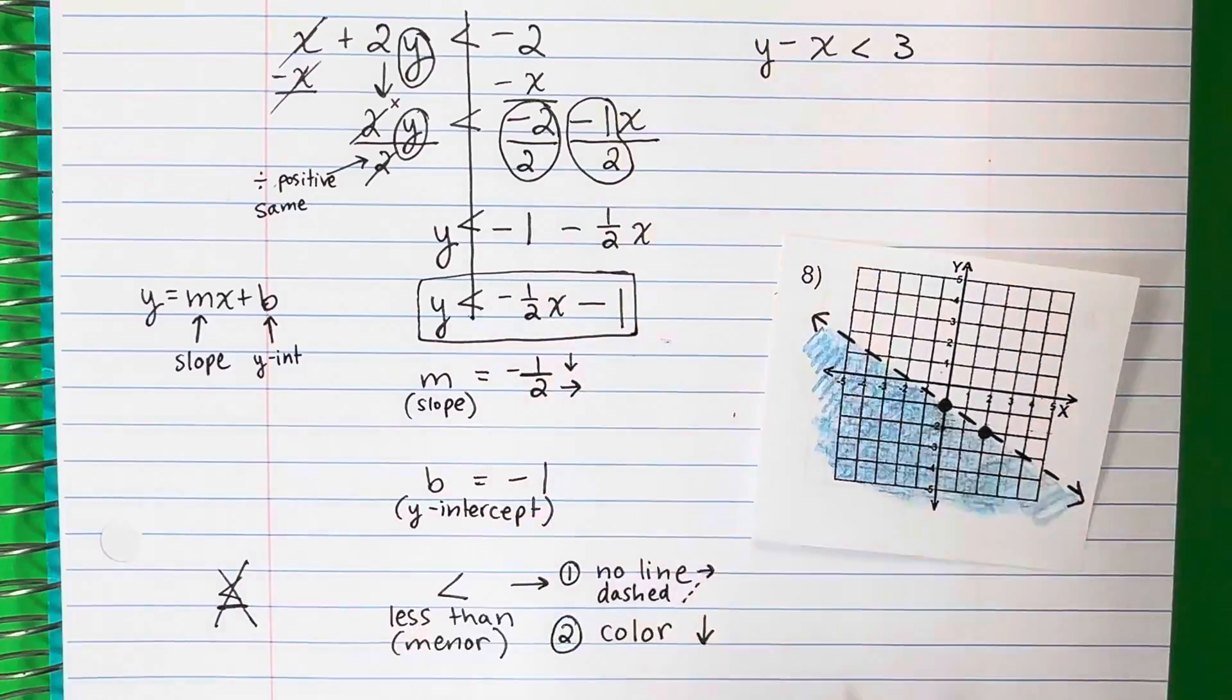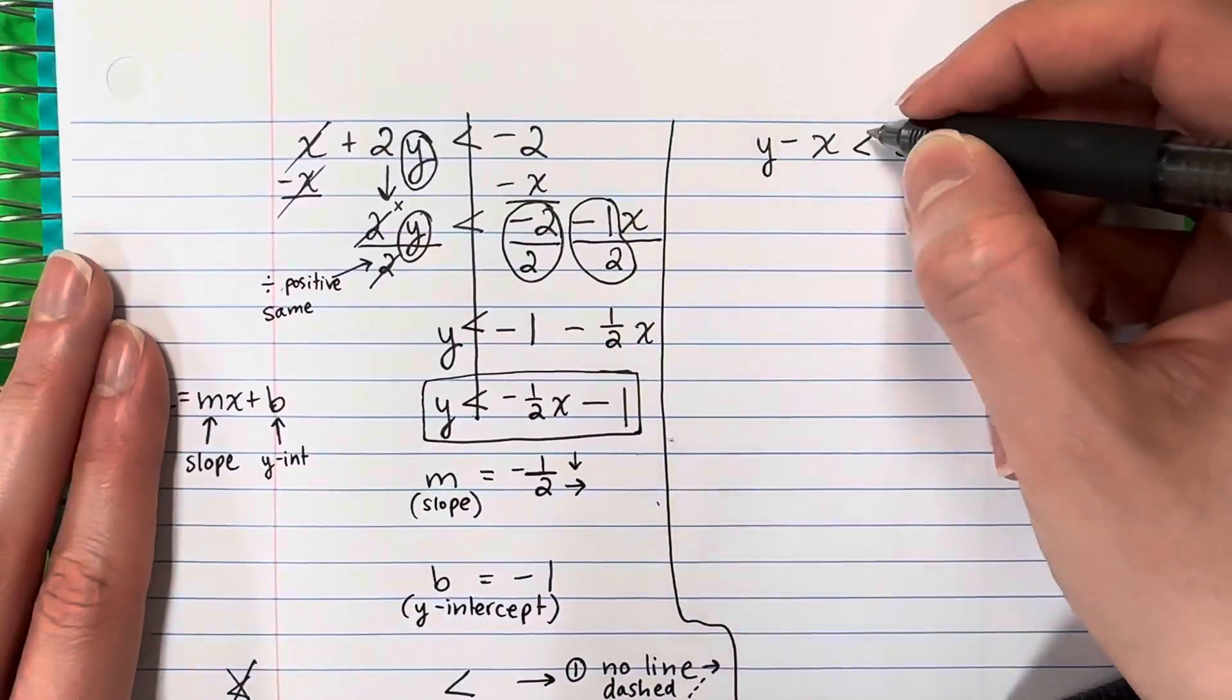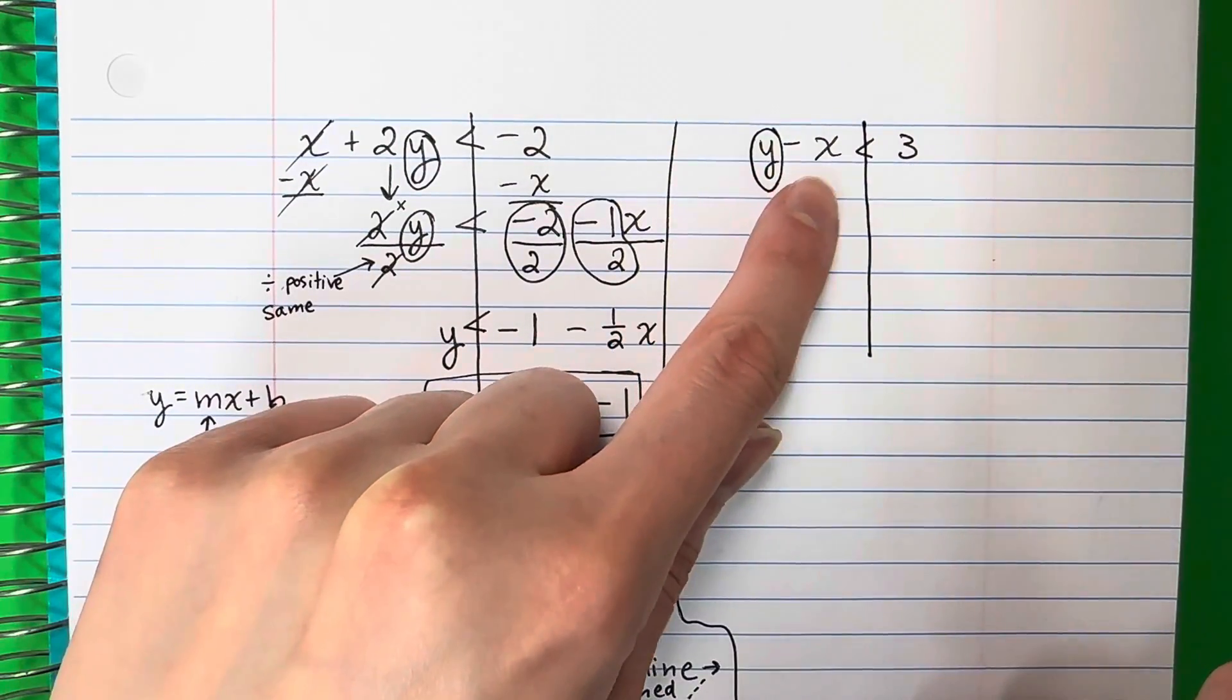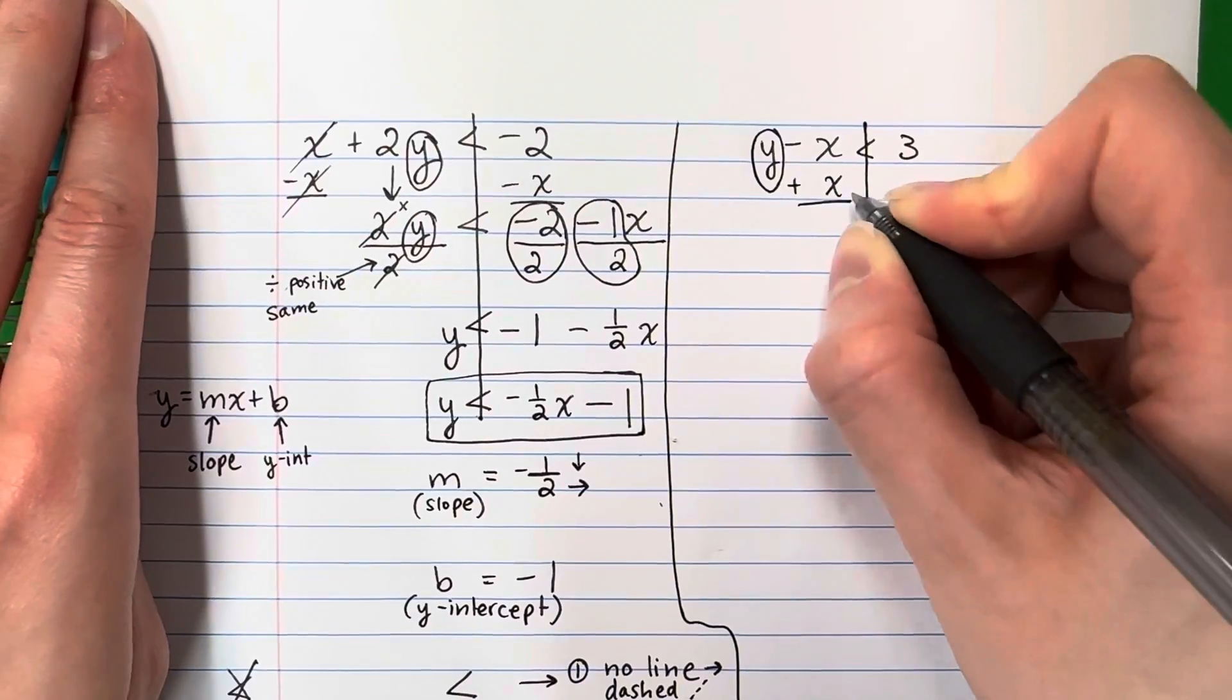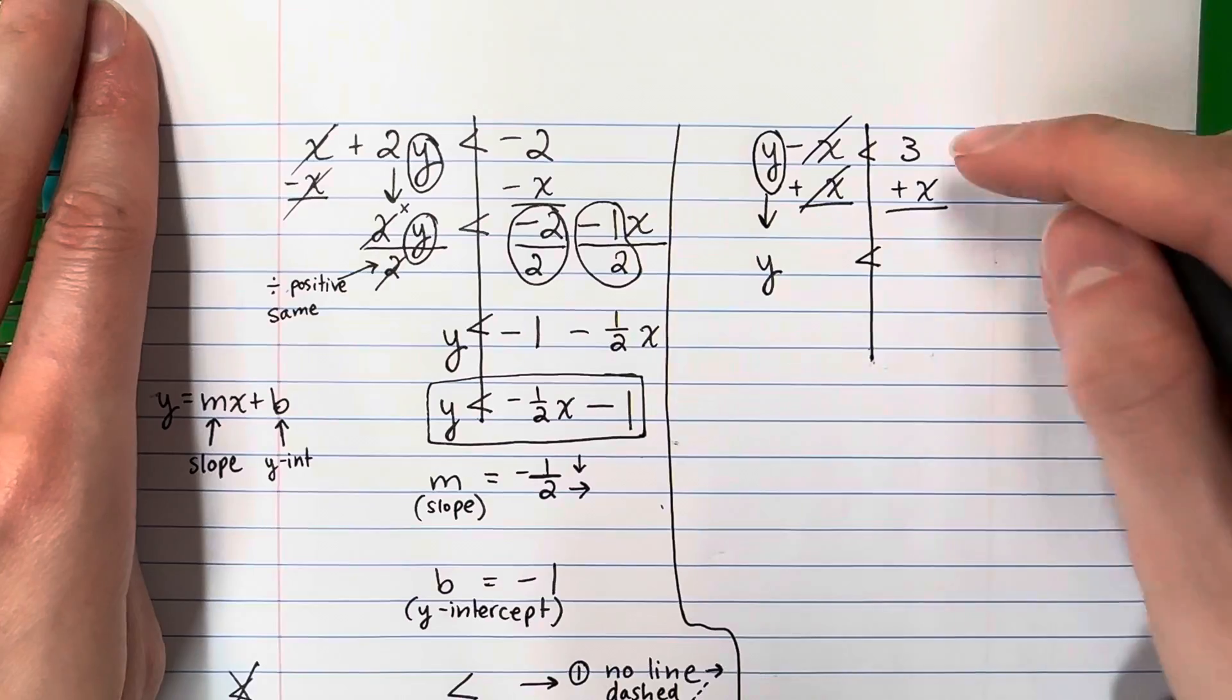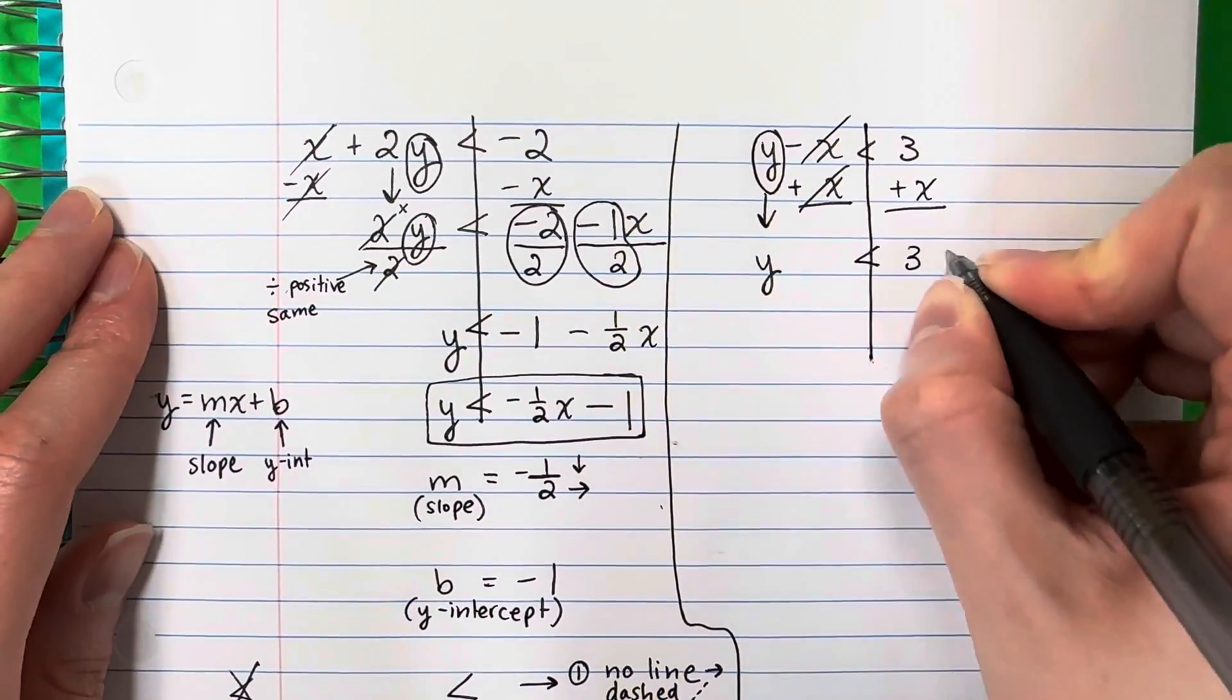Now we're going to go ahead and do our other one. Let's go ahead and move the graph, we're going to do the other one. I'm going to do a little separation here. Let's go ahead and do this one. So my goal is I want the y alone. So what do I need to move? I need to move that minus x. The opposite of minus is plus. So plus x. Copy, plus x. Go back, here copy y. Negative x plus x is zero, it cancels. Copy less than. Here you're going to go ahead and copy because they're not the same. Here no x, here x. So copy 3 plus x.